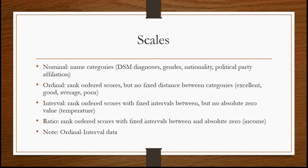Ordinal scales have rank-ordered scores but no fixed distance between the categories. For example, a scale that assigns scores of excellent, good, average, or poor gives us a rank order — excellent is better than good — but we don't know how much better excellent is than good. We can't say excellent is two times as good as good. So there's a rank order, but no fixed distance between categories.